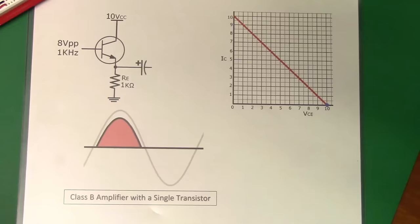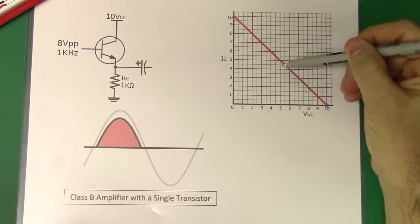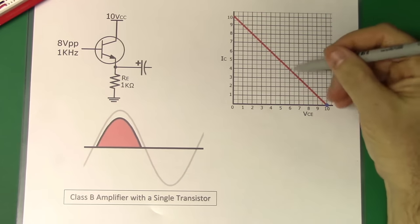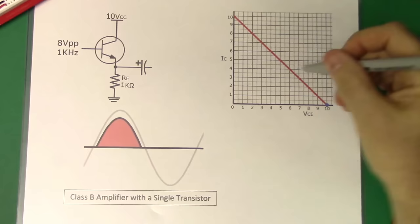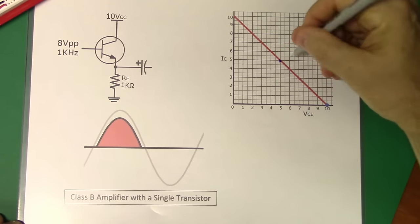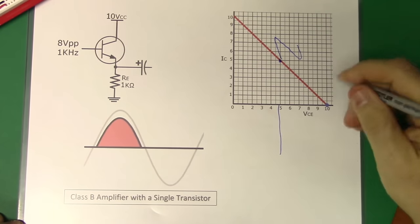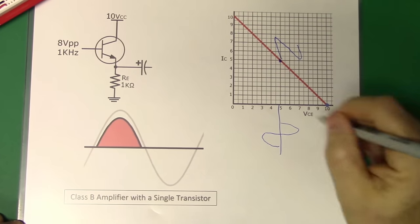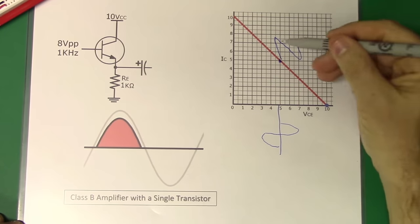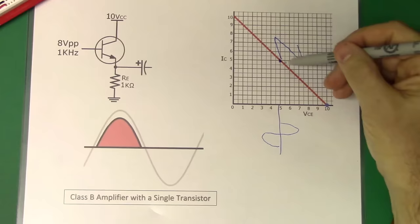Recall that in a Class A amplifier, when we were dealing with a load line — this would be the load line for the circuit over here — in a Class A amplifier, we want to bias it in the middle so the output can match the input. We have really good fidelity on a Class A amplifier. If it's centered in the middle of the load line and we have a sine wave coming in, we would also have a sine wave on the output. We get 360 degrees of output for 360 degrees of input. The problem with this is the poor efficiency — great fidelity, but poor efficiency.